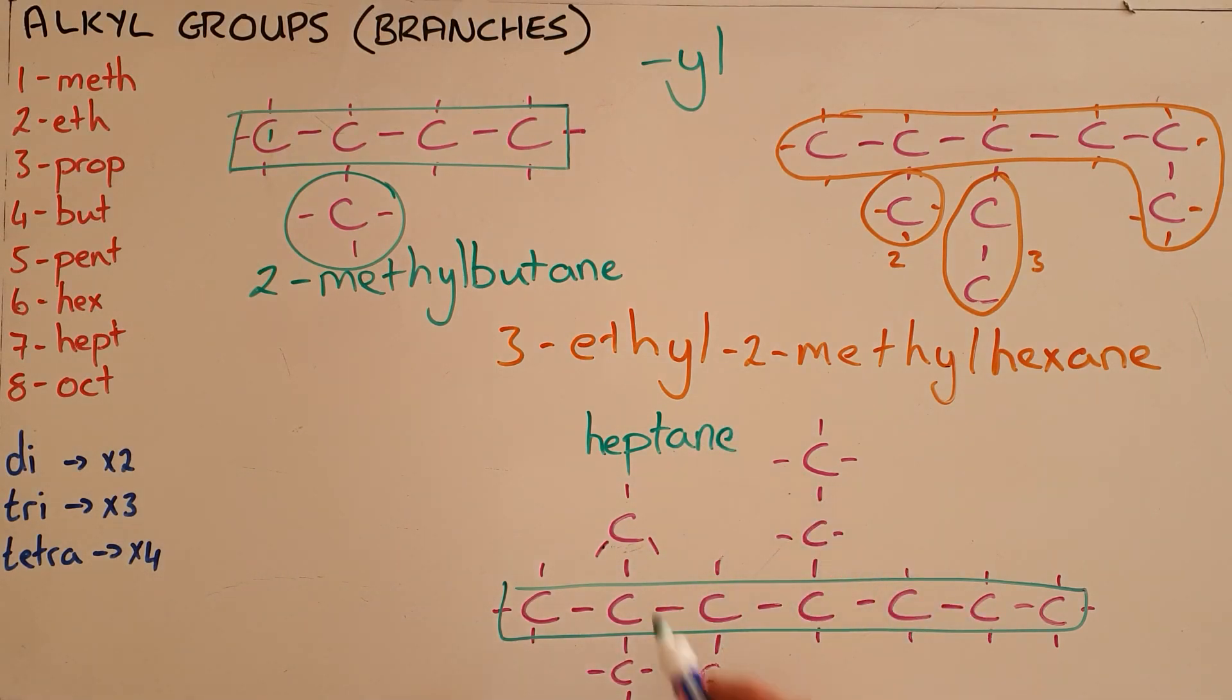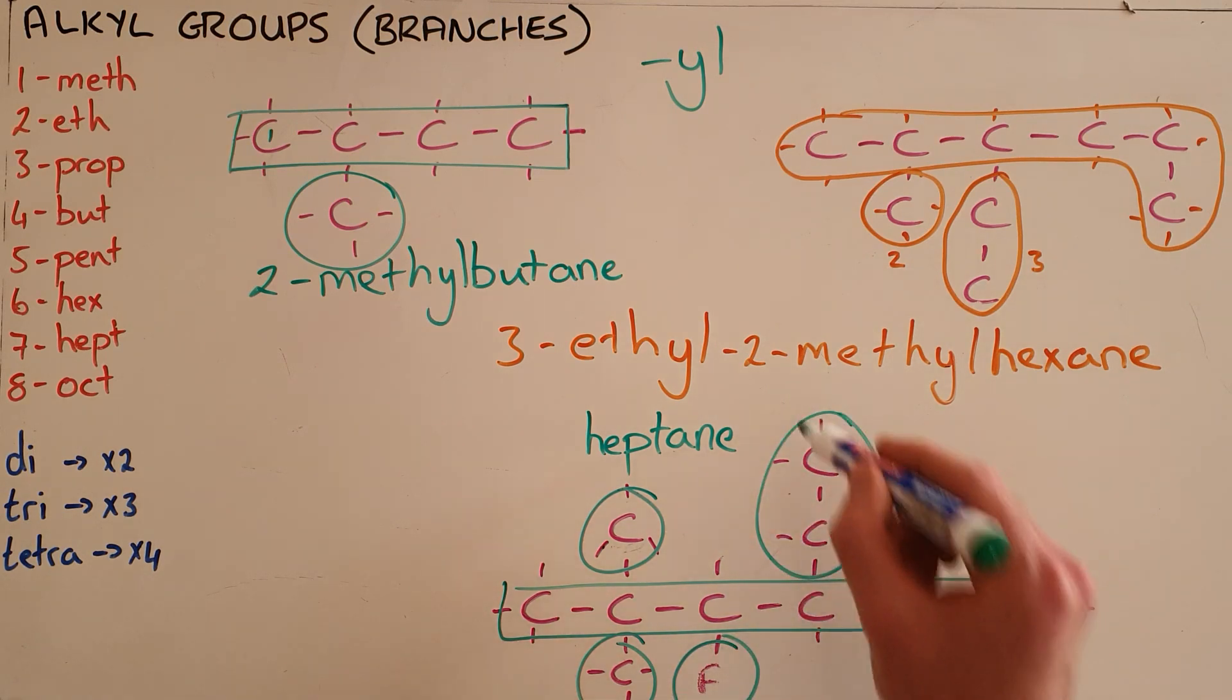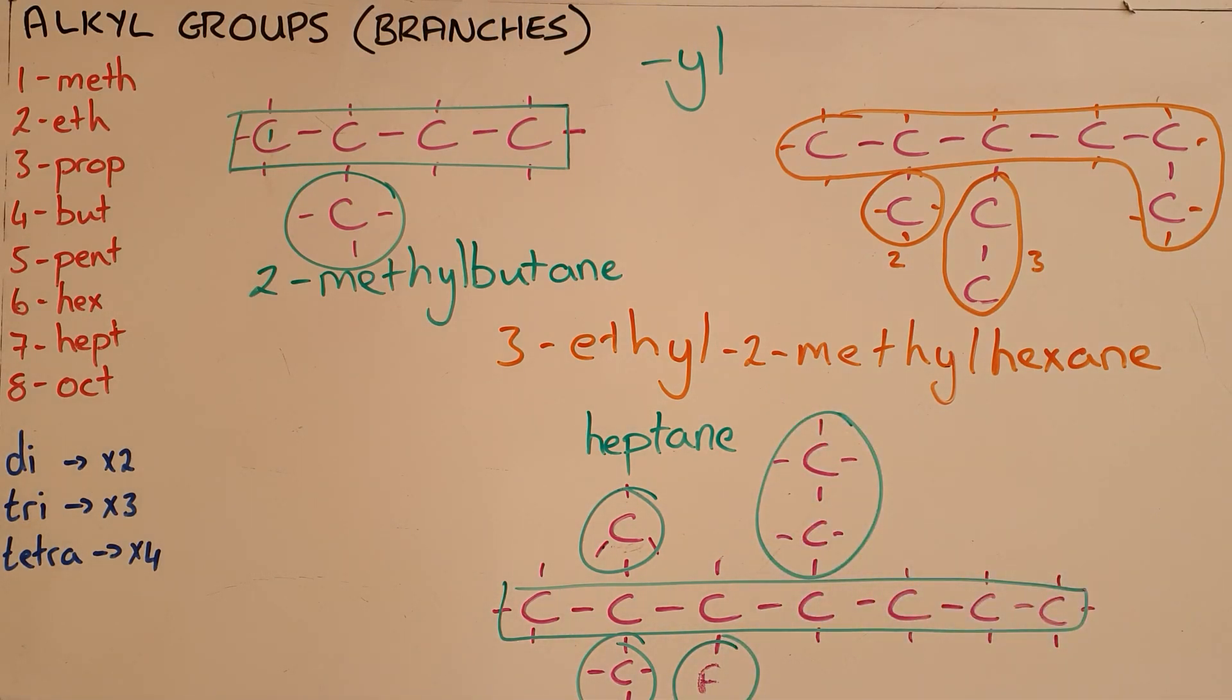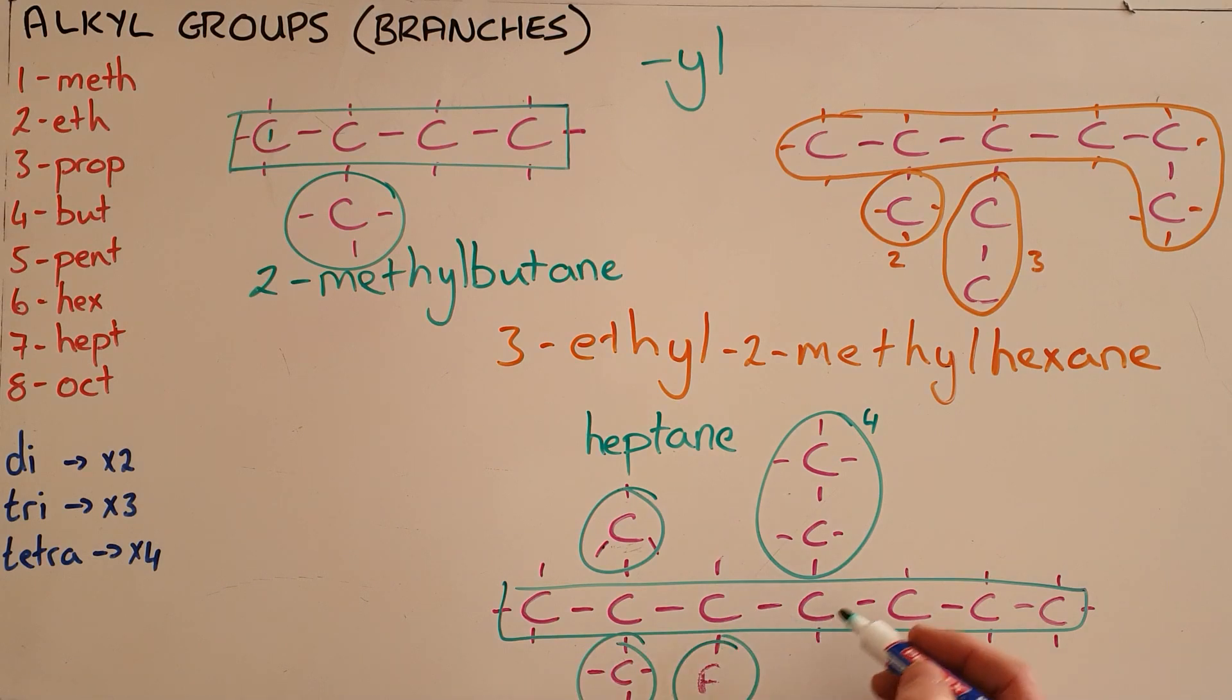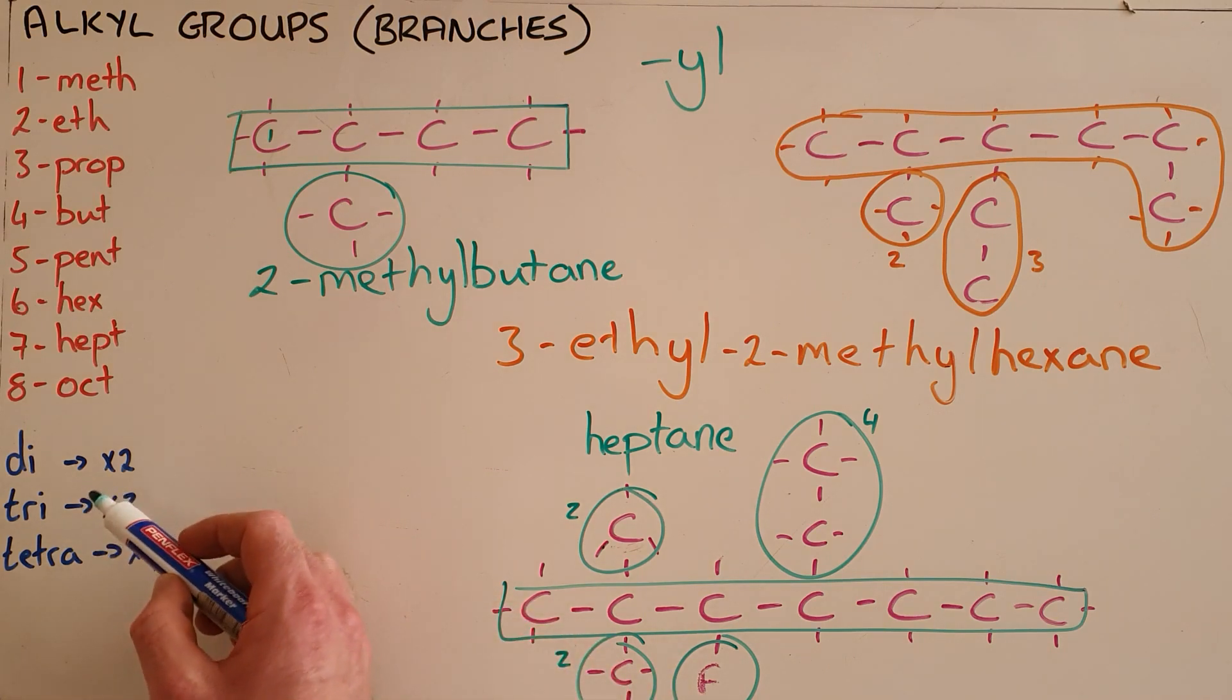Where we can now see that we have two methyl branches, a fluorobranch and an ethyl branch. And once again we arrange these alphabetically. Alphabetically the ethyl branch would come first and that would be a 4-ethyl because it is on the fourth carbon. There are two methyl branches, both of those on the second carbon. And just like we did for the halogens, when there are two of them we would use the prefix di. So we are going to have dimethyl here and then a fluorobranch on the third carbon.